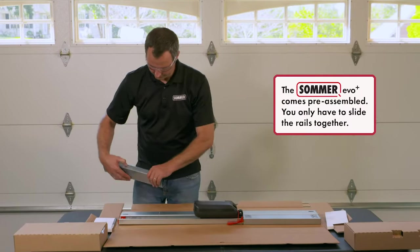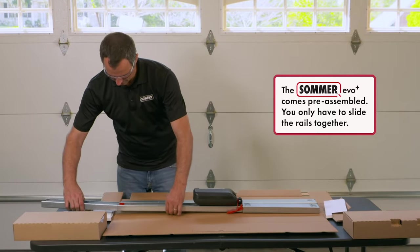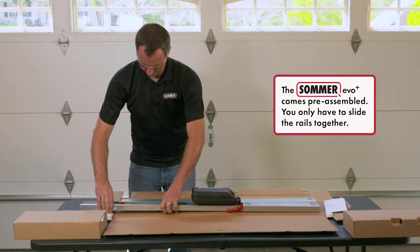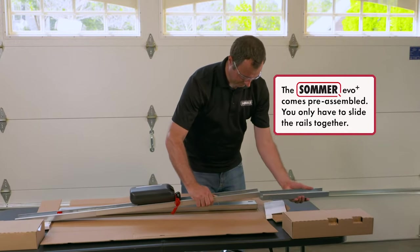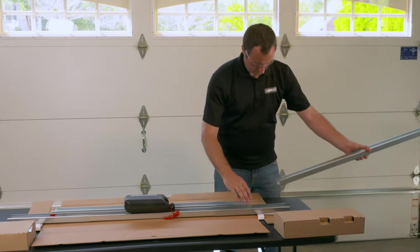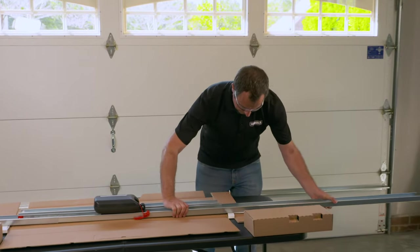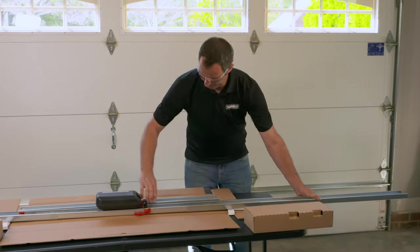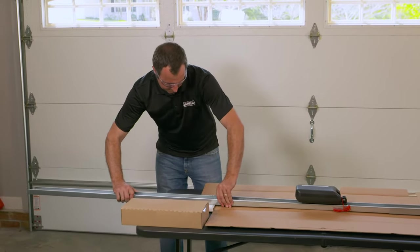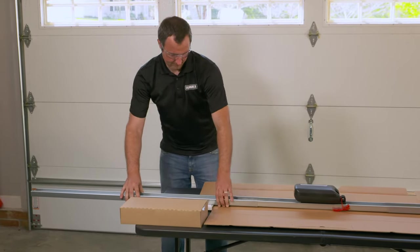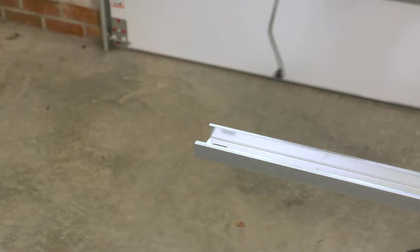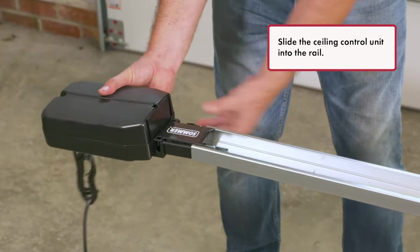The Summer EVO Plus comes pre-assembled. You only have to slide the rails together. Slide the ceiling control unit into the rail.